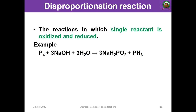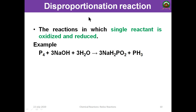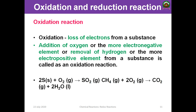The disproportionation reaction involves a single reactant that is simultaneously oxidized and reduced. For example, P4 in the presence of sodium hydroxide and water gives 3NaH2PO2 under the appropriate conditions. Both compounds are simultaneously getting oxidized and reduced in the same reaction. This is known as a disproportionation reaction.